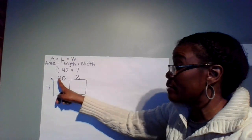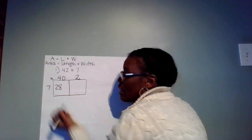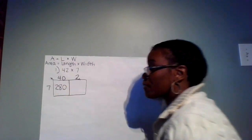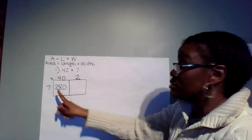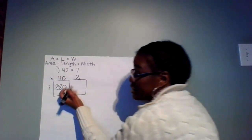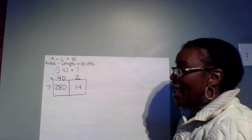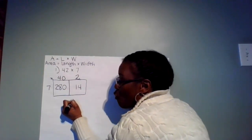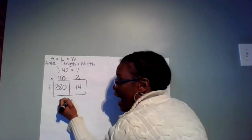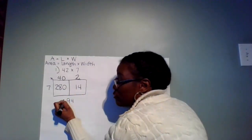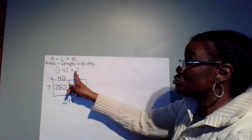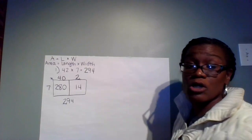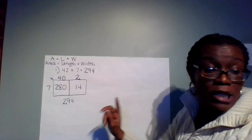Seven times 4 is 28. I ask my scholars: how many zeros do you have between 40 and 7? One zero — so 7 times 40 is 280. Now 7 times 2 is 14. Now I can add: 4 plus 0 is 4, 1 plus 8 is 9, I have no hundreds so I just bring down the 2. So 42 times 7 is equal to 294.